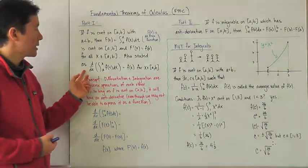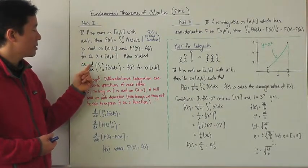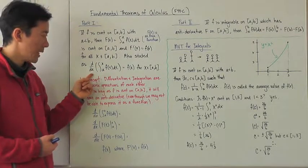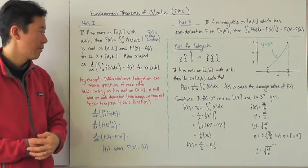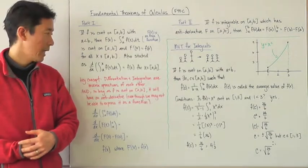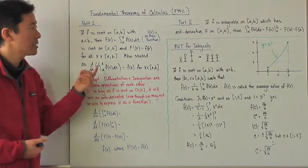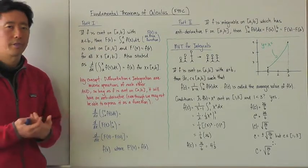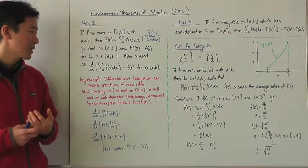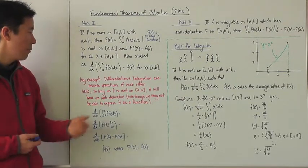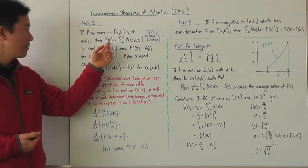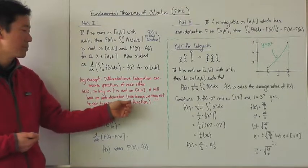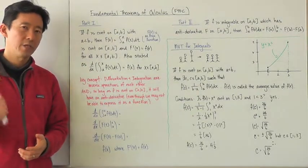We can also state this a little bit differently. We can state this as the derivative of the integral from a to x of f of t, dt, with respect to x, is going to be equal to f of x for x an element of the closed interval [a, b]. A couple of key concepts to take from this is that differentiation and integration are inverse operations of each other. And so long as f is continuous on the closed interval [a, b], it will have an antiderivative — and the antiderivative is what that is right there. The important thing to remember is that even though we may not be able to express it as a function, the antiderivative will exist.